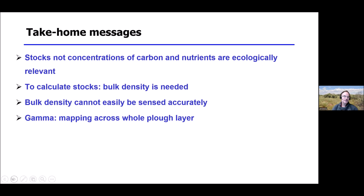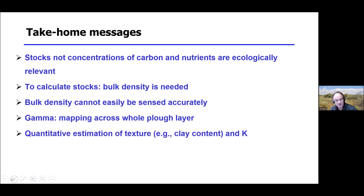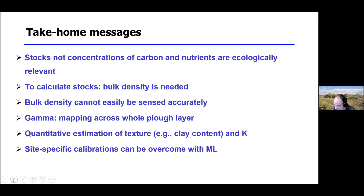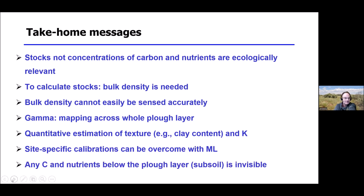As a compromise, gamma spectroscopy at least integrates across the whole plow layer and gives estimations of related properties like clay content or properties correlated with potassium. But it does not give a direct estimate of nitrate content, and with this technology we still miss everything below the plow layer. We can partially overcome the site-specific calibration problem, but we do not assess anything in the deeper subsoil.